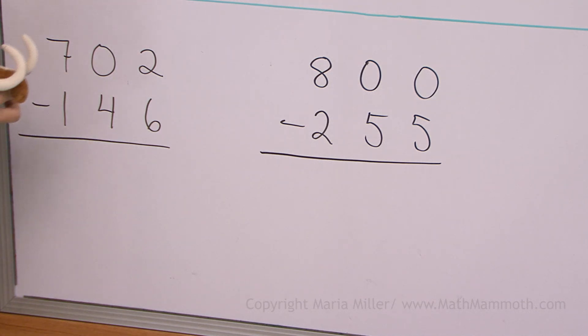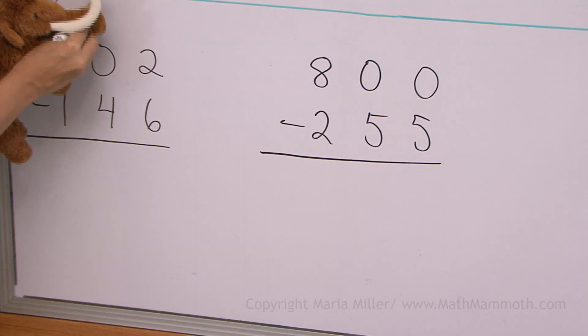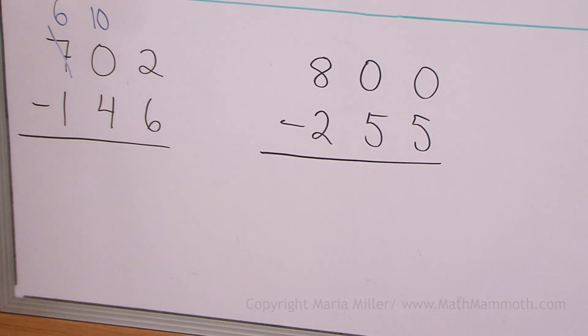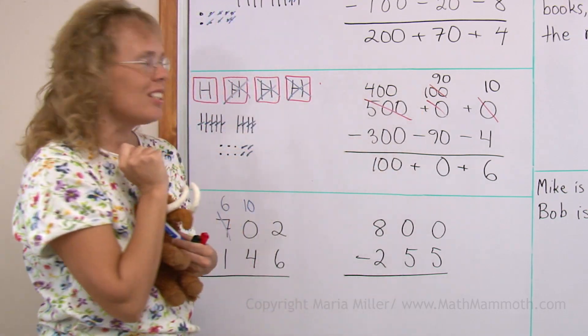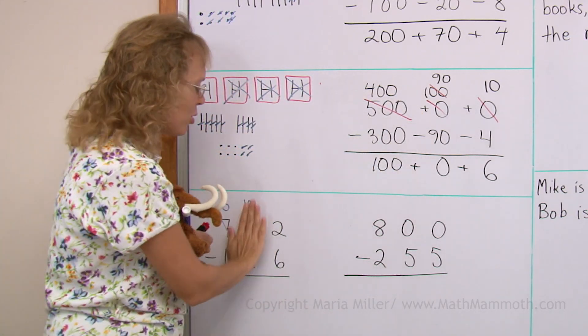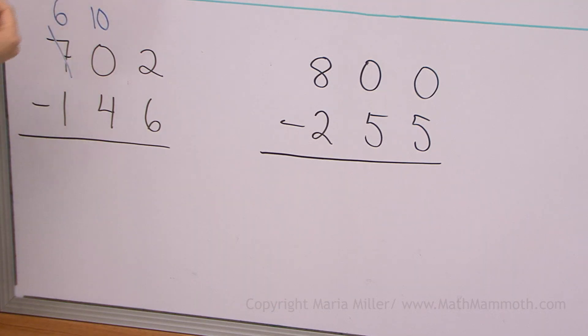So we need to go regroup starting with the hundreds, take one of the hundreds. Take one of the hundreds that leaves 600. And then one hundred moves here, but it becomes ten tens. We write ten here because one hundred is ten tens. In the tens column, ten tens. Over here I wrote hundred for clarification. But when we're doing it the normal way, the usual way, we write ten here because one hundred is ten tens.